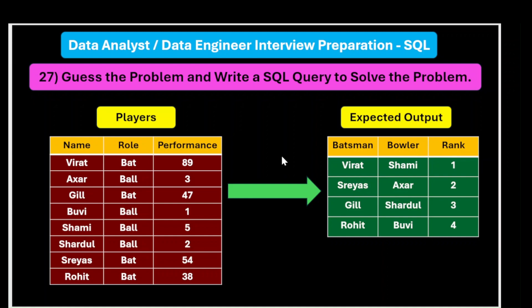Before guessing the problem, we need to understand the format of the expected output. In the batsman column we have Virat, bowler Shami, rank as one. Looking at the players information — name, role, and performance — if a player's role is 'bat', the player comes under batsman. If the role is 'ball', that player comes under bowler. Virat's performance is 89 runs; Shami's performance is wickets taken.